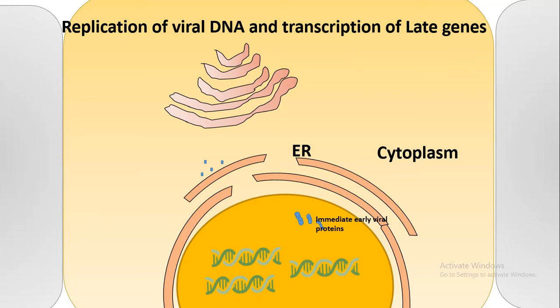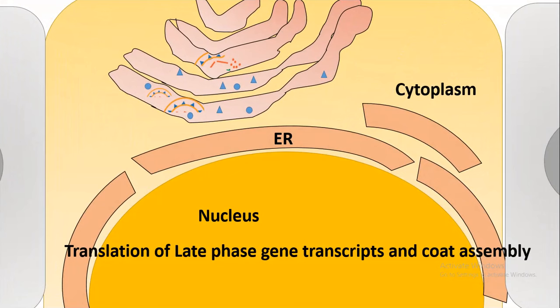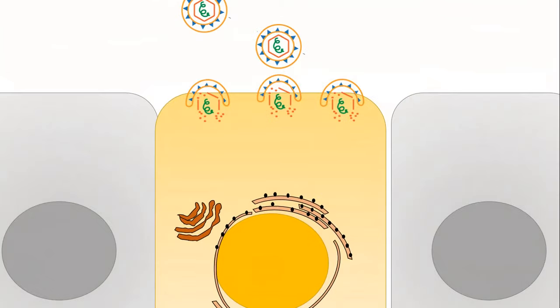After a while, after the replication, late gene products are transcribed and translated, and they are sent by the cell into the Golgi bodies. Inside the Golgi, several capsid proteins, envelope proteins, etc. are produced. So the viral particles are produced inside the Golgi. The last step is virus assembly. The virus starts assembling, and once assembled, they leave the infected cell and are ready to infect another new host cell.